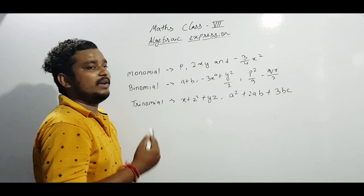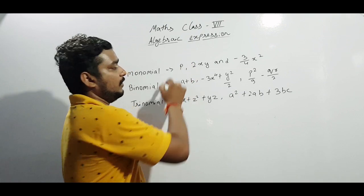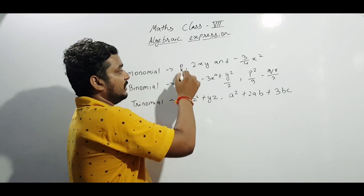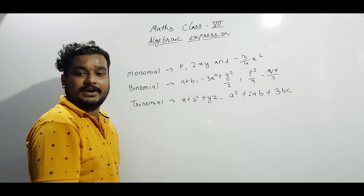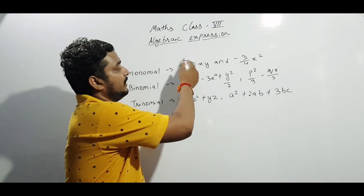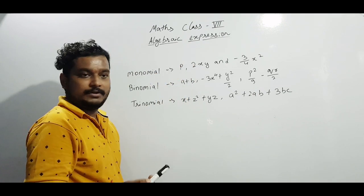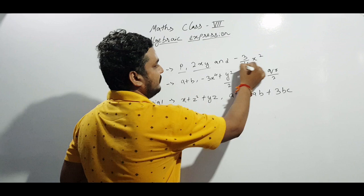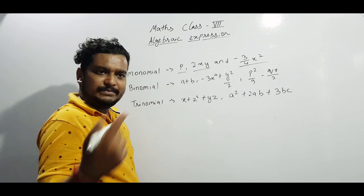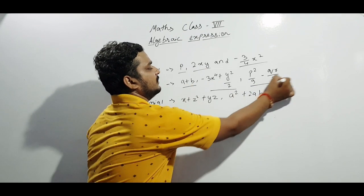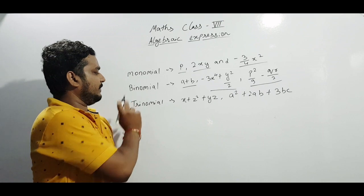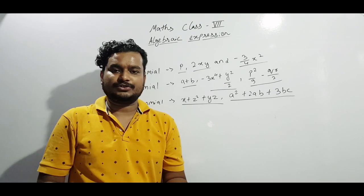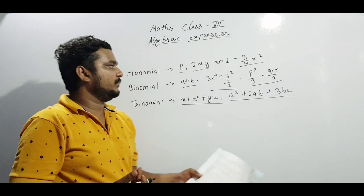Monomial is having only one term of the algebraic expression, and that particular term will be non-negative — meaning the power or degree of the variable will not be negative. So p is a monomial with one term. In binomial, we are having two terms. The combination of two terms is called binomial, and trinomial is the combination of three terms.